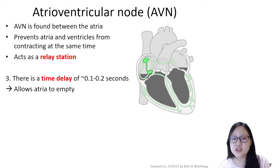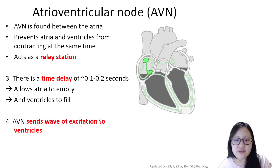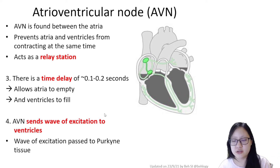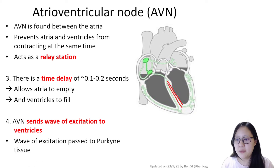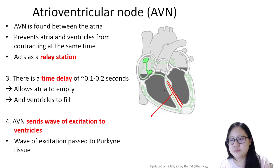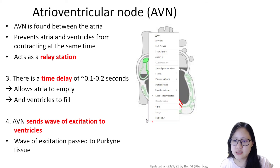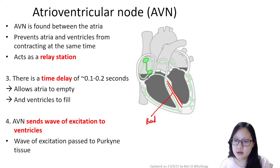This 0.1-second delay allows the atria to empty completely into the ventricles. Then the atrioventricular node sends a wave of excitation to the ventricles — but this is not straightforward. It first passes to the middle nerves, not the sides. It passes to the middle parts at the septum, and this nervous tissue is called the bundle of His.